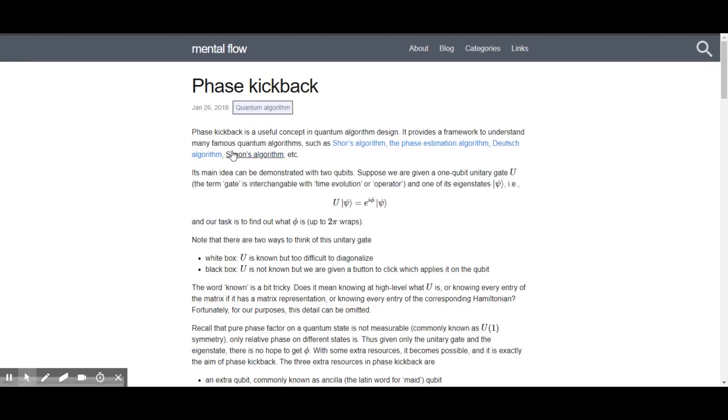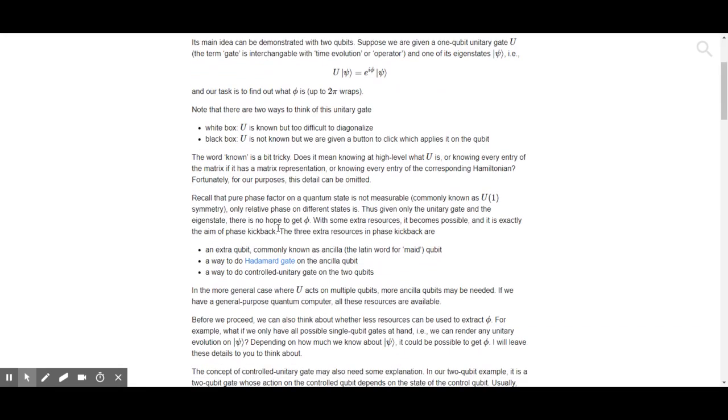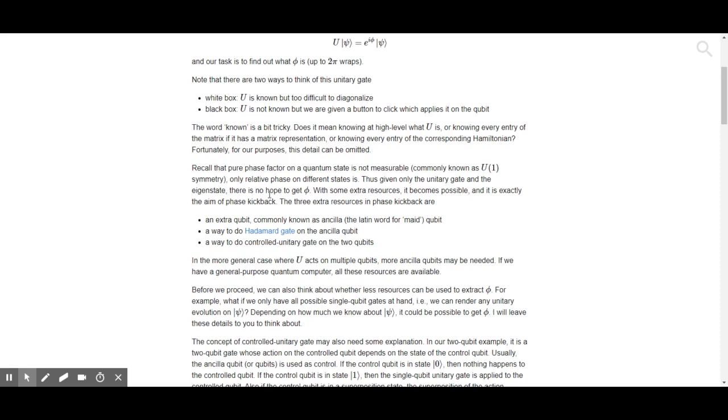So it provides a framework to understand many famous quantum algorithms. I remember I was breaking down those algorithms without really understanding phase kickback. Its main idea can be demonstrated with two qubits. Suppose we're given a one qubit unitary gate U, and our task is to find what phi is after 2π wraps. I'm kind of lost a little bit already, but there are two ways to think of this unitary gate: white box or black box.